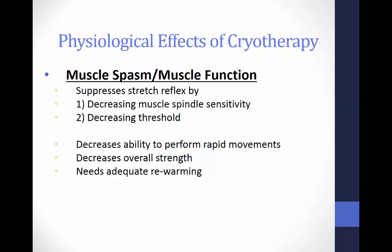Cryotherapy also decreases muscle spasm by suppressing the stretch reflex, reducing the threshold of afferent nerve endings and decreasing the sensitivity of the muscle spindles. The use of cryotherapy decreases nerve conduction velocity, thus breaking the pain-spasm cycle, decreasing the speed of the reflex response, and slowing the spasm. The sympathetic nervous system stimulation decreases muscle tone through reduced muscle spindle activity and gamma motor neuron potentials. Cryotherapy will result in a decreased ability to perform rapid movements and decreased overall strength, so muscle tissues need adequate rewarming — approximately 30 minutes — prior to intensive or athletic activities.